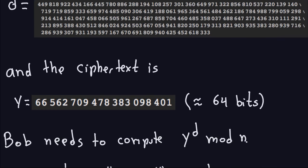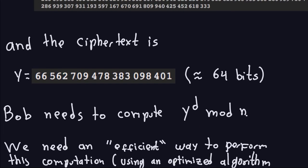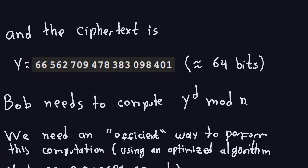Here, y is not that big but d is huge. Imagine the amount of computation required if we just do multiplications naively — a really bad idea would be taking y raised to the d power, which gives you a really, really big number, and then reducing it modulo n. That will take a very long time. That's not the way to do it — you don't perform the full exponentiation first and then apply modulo. We need an algorithm that makes this computation relatively fast.